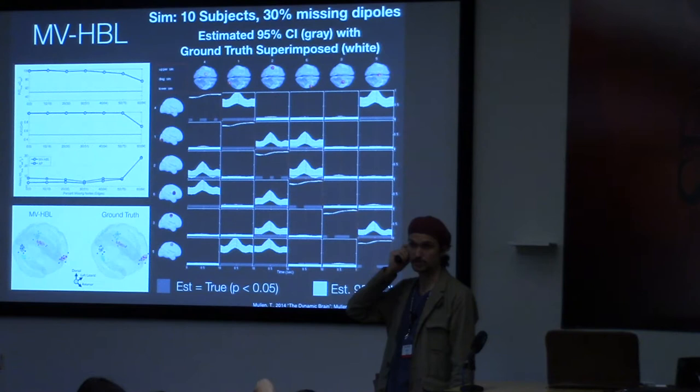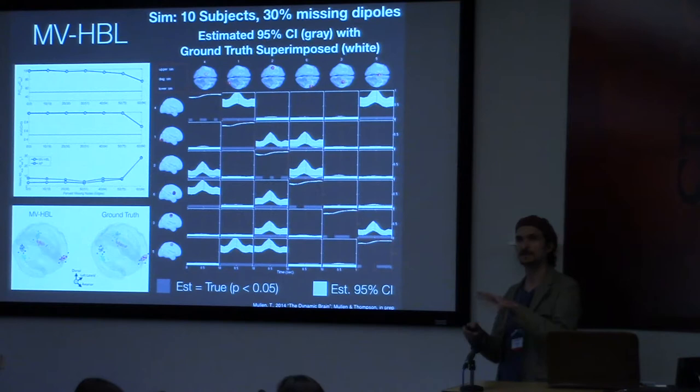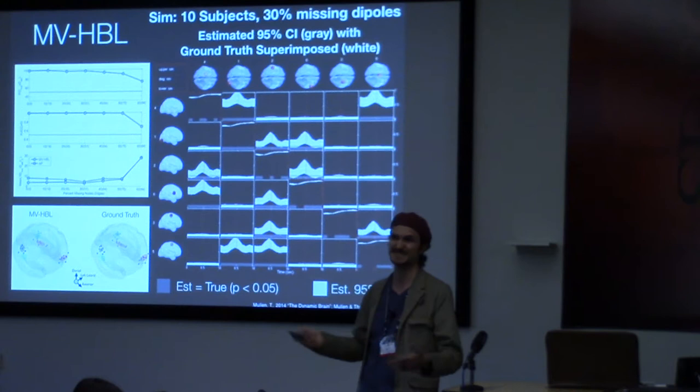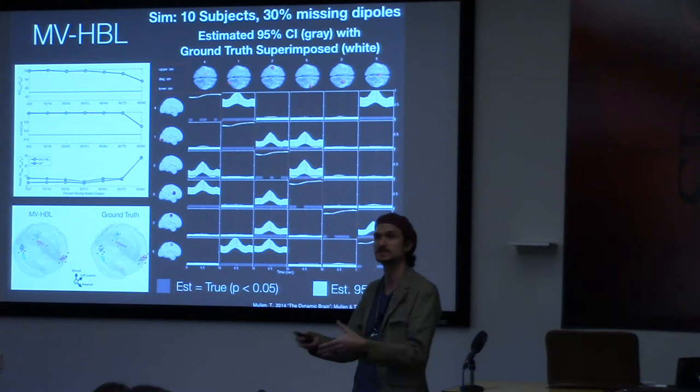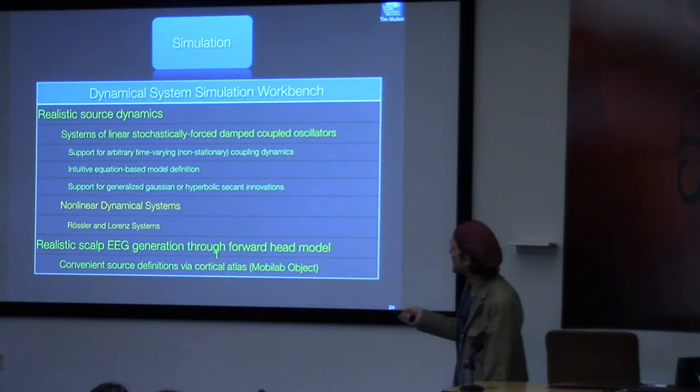The multi-view hierarchical Bayesian learning tool chain provides statistical confidence intervals and averages derived in a principled Bayesian way across multiple subjects, even in the presence of missing data — so if you have dipoles in some subjects but not others, it can still make inferences about the group mean.